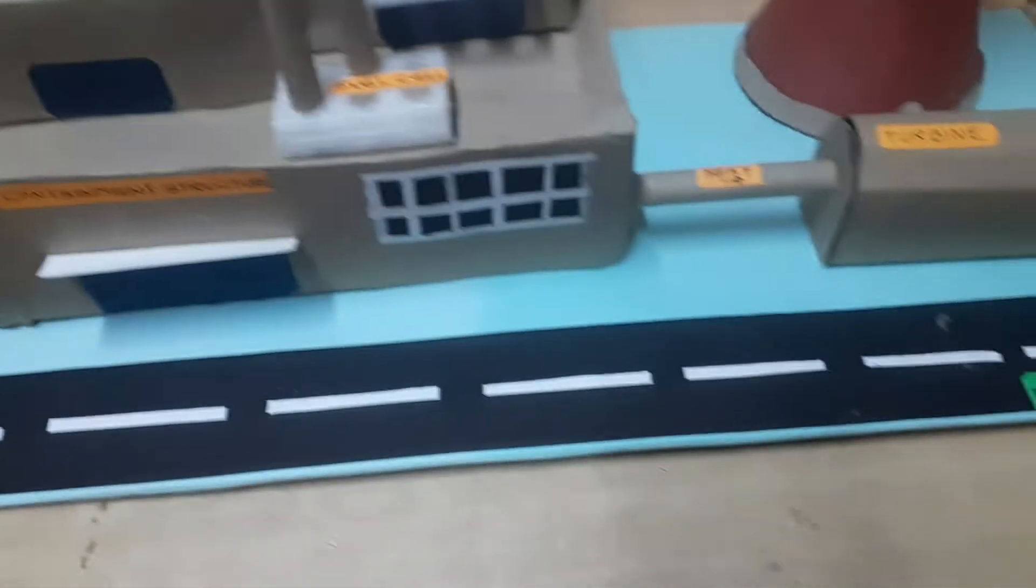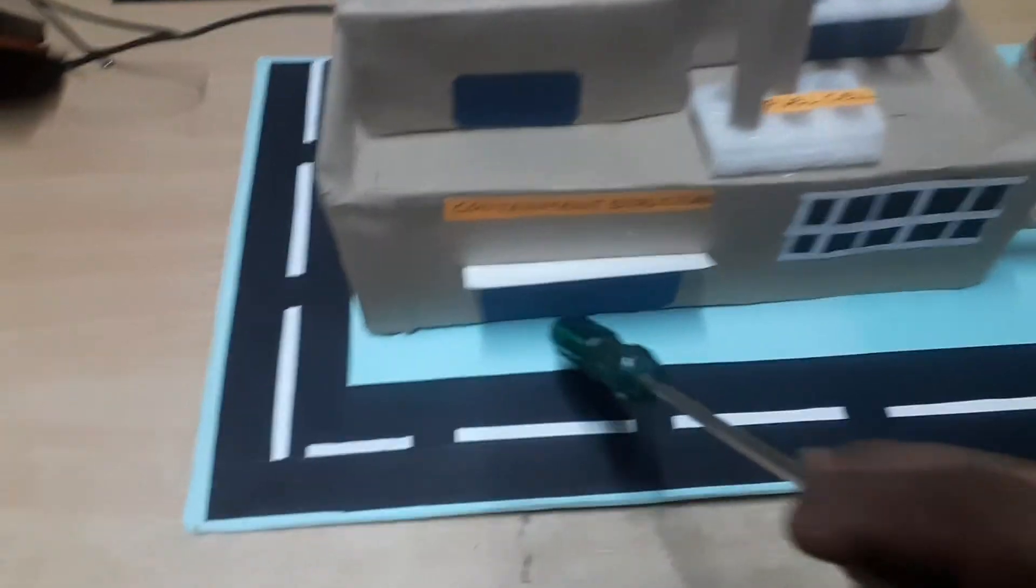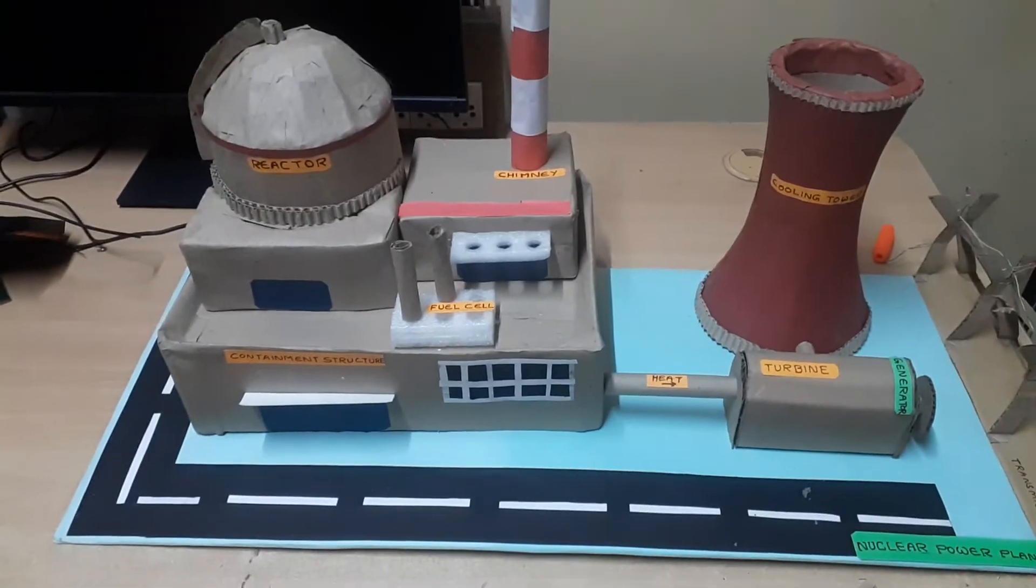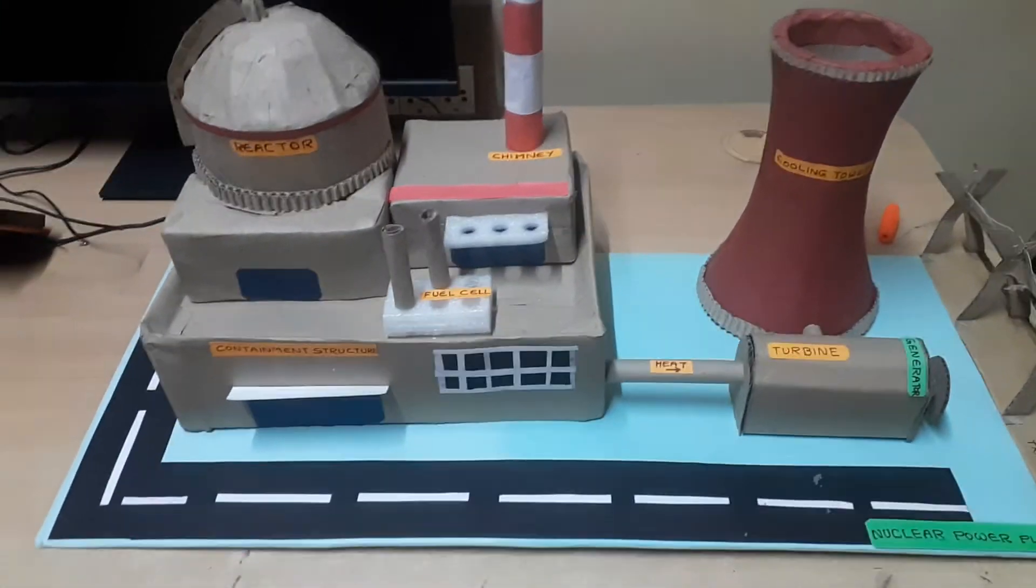This is the road through which all the transportation or the material required and the personnel will travel into this containment structure. This is the broad classification of all the components of a nuclear power plant.